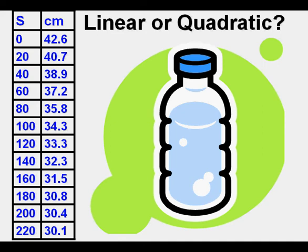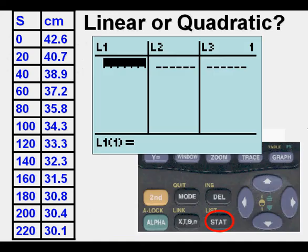And so what we can do is we can draw arrows, and we can calculate differences and find the rate of change this way. But with our graphing calculator, we can get it to do it for us.